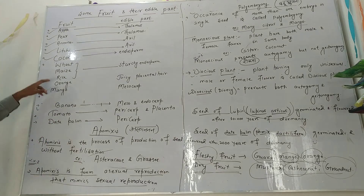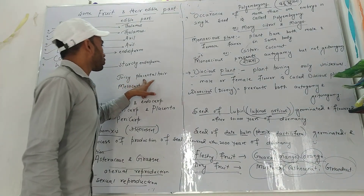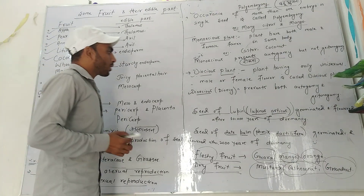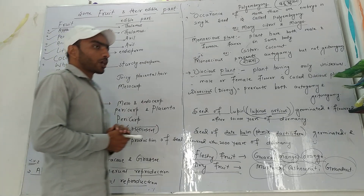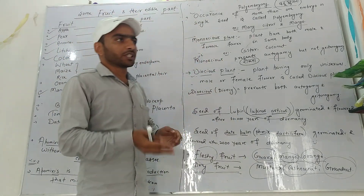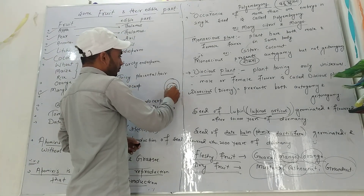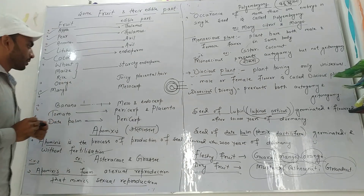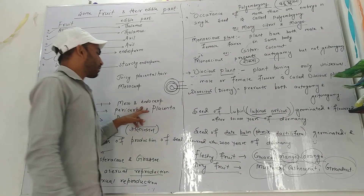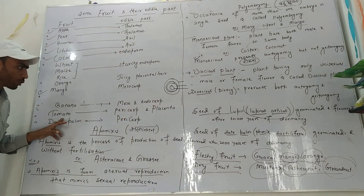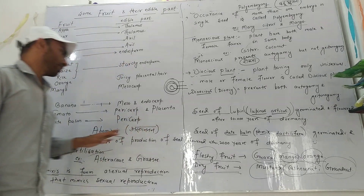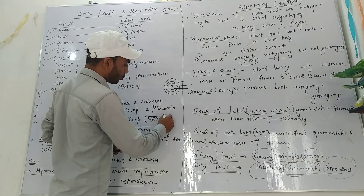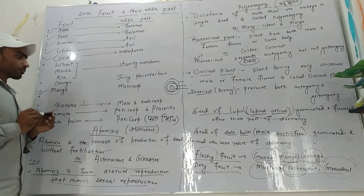What do you eat in orange? Juicy placental hair. What do you eat in mango? Mesocarp. In banana, the pericarp and placenta — the edible part is the pericarp.